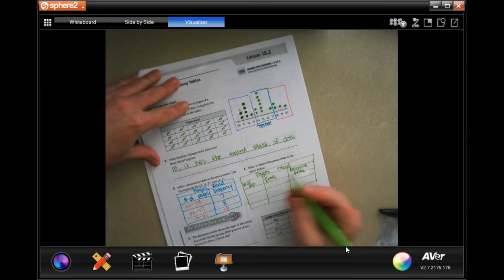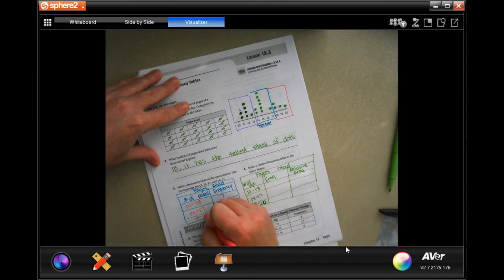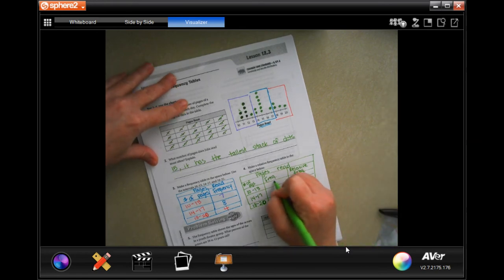So we're still going to have 10 to 13, we're still going to have 14 to 17, and we're still going to have 18 to 21, or to 20. Sorry, 20. I don't know why I did 21 on the other one. So we're still going to have seven, we're still going to have eight, and we're still going to have four.